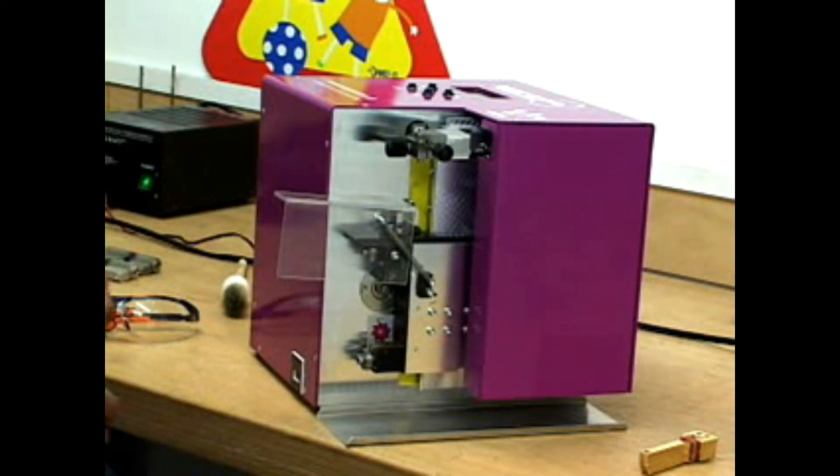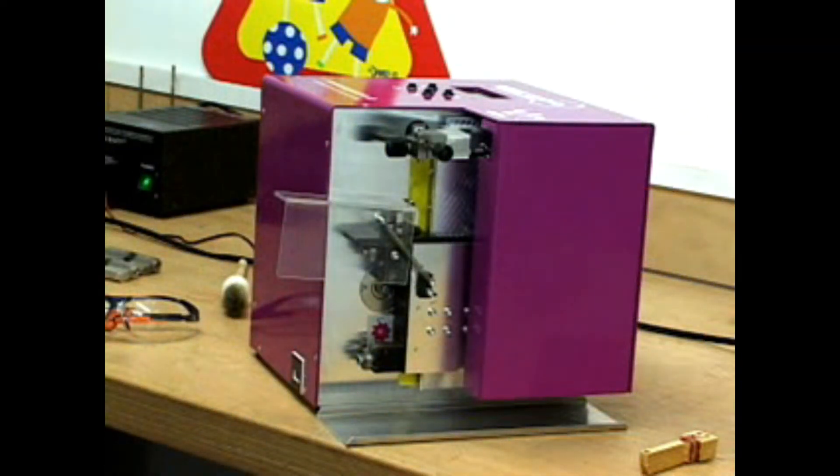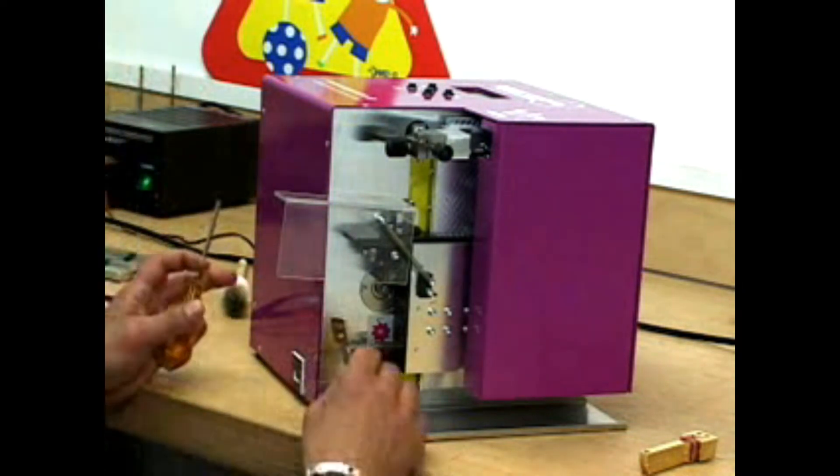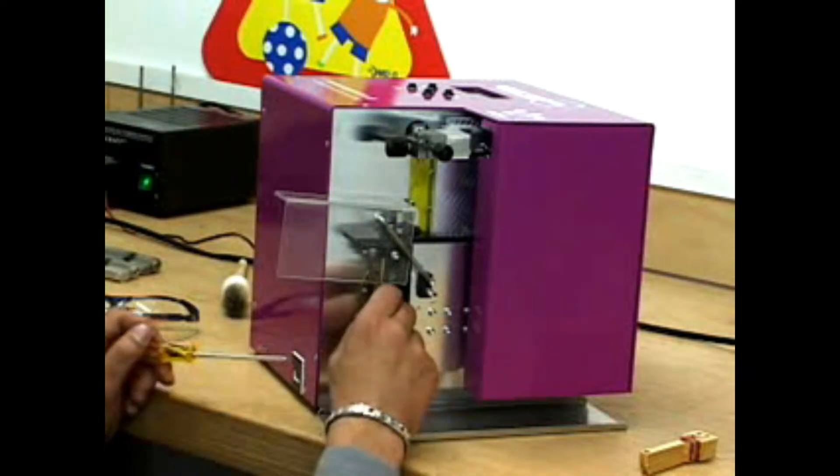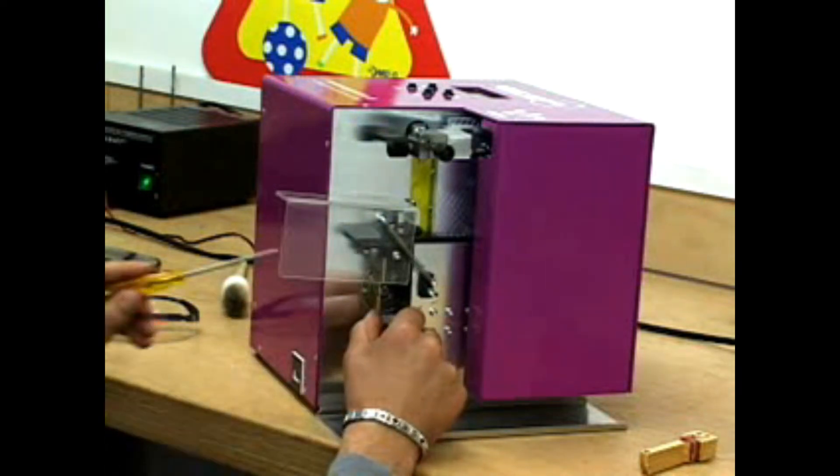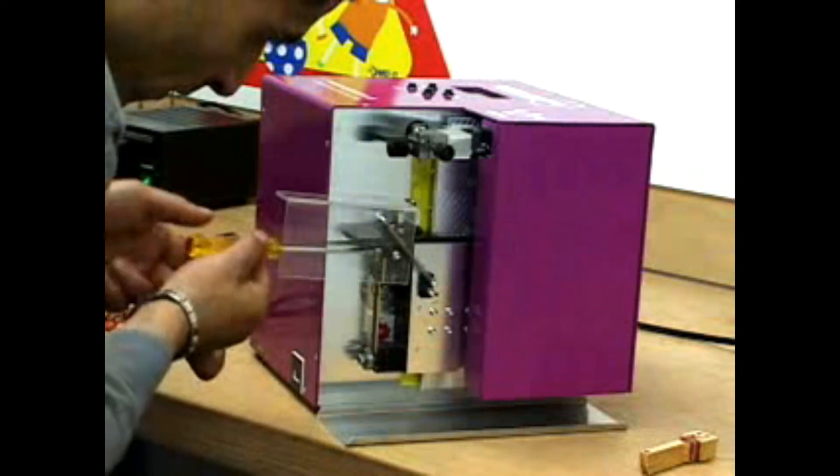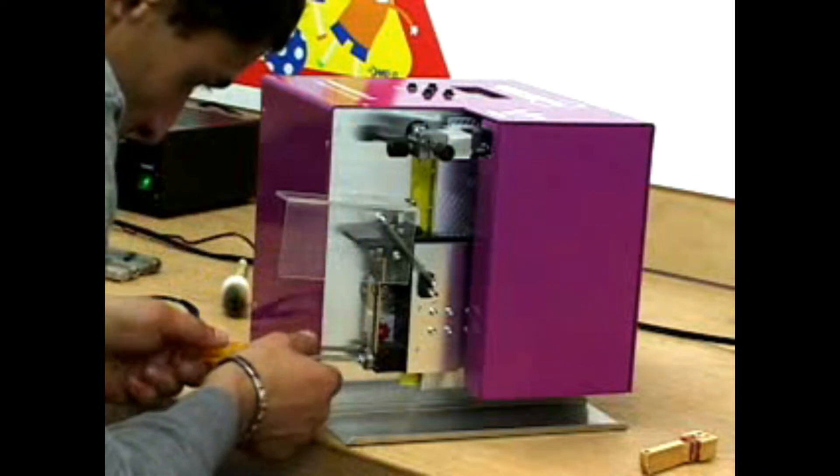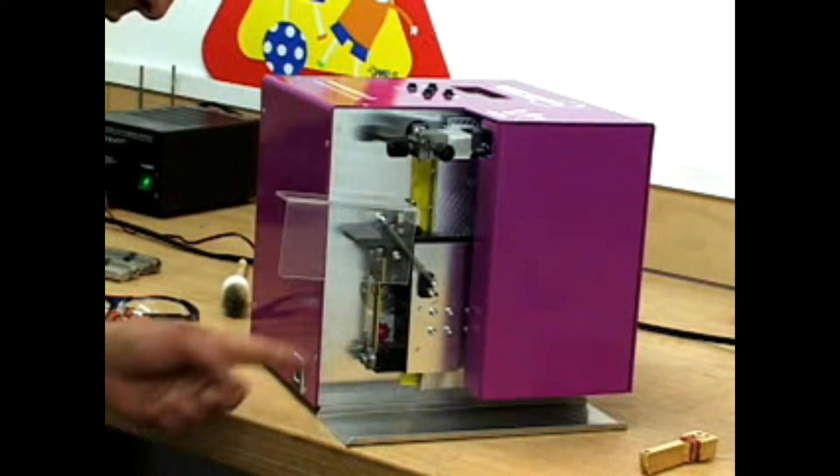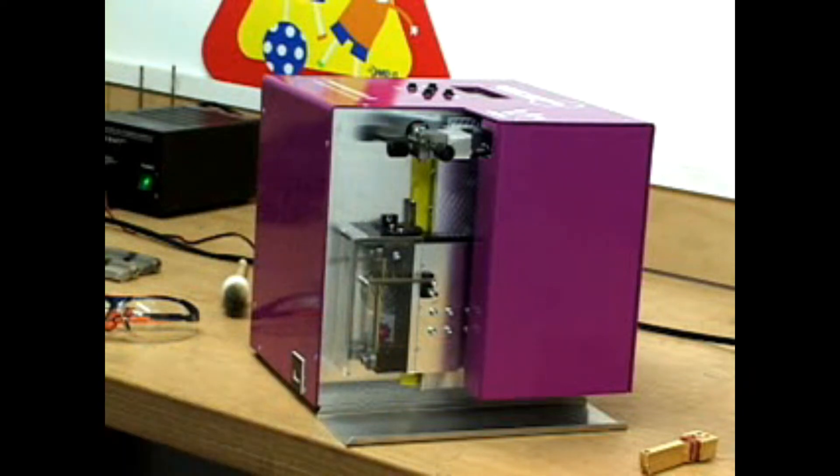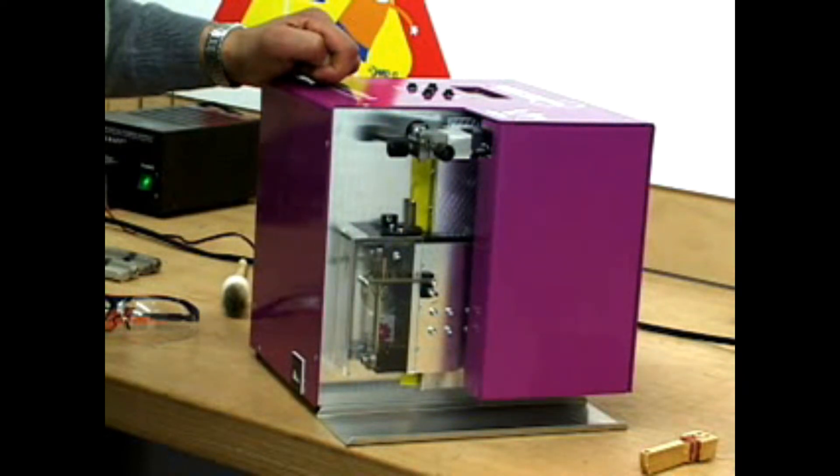The next step I need a small screwdriver to fix the key blank inside. The only thing that you must see is that the key looks to the left side. You close the protection shield and start with the manufacturing of the key blank.